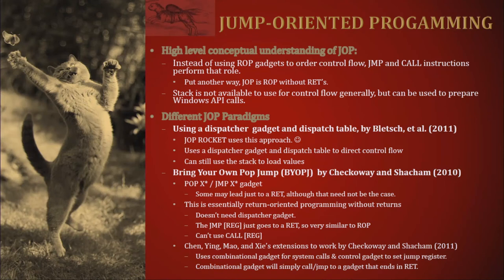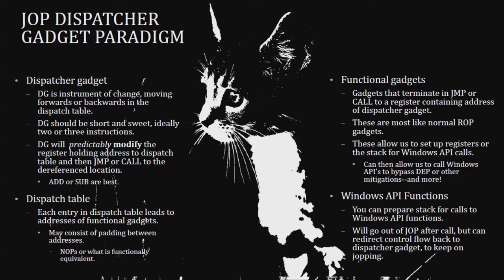There are also some different techniques available with JOP that you can use in your everyday ROP — for example a pop-jump, where you pop into a register and then jump to that register in order to go back to the stack. So you can JOP and then go back to ROP. The dispatcher gadget is the instrument of change — it moves things forward and backwards in that dispatch table, and ideally should be short, sweet, and predictably modify the register holding the address to that dispatch table. The dispatch table has entries leading to the addresses of the functional gadgets, which allow us to modify registers and set up the stack for our Windows API calls.